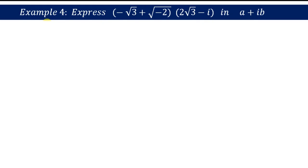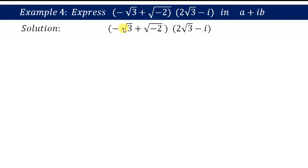Hello students, in this video we are discussing example 4 from complex numbers — that is, express (-√3 + √(-2))(2√3 - i) in a+ib form. We need to express these terms in the standard form, that is a+ib form. So let us pick the question: (-√3 + √(-2))(2√3 - i).